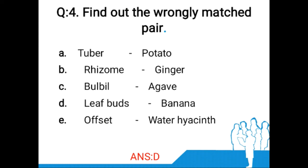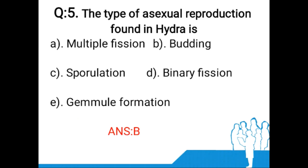The fourth question: Find out the wrongly matched pair. A: tuber–potato, B: rhizome–ginger, C: bulbil–agave, D: leaf buds–banana, E: offset–water hyacinth. The correct answer is D. The banana plant is the largest herbaceous flowering plant. Banana plants are often mistaken for trees, but their main upright stem is actually a pseudostem that grows 6 to 7.6 meters tall, growing from a corm. Each pseudostem can produce a single batch of bananas.